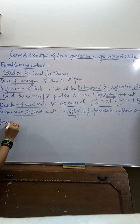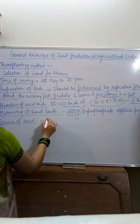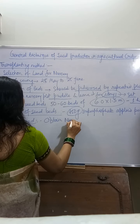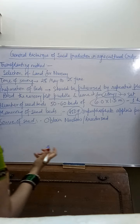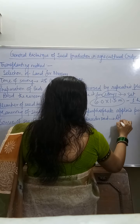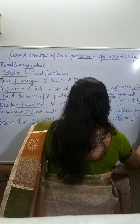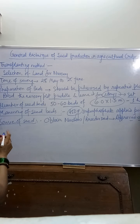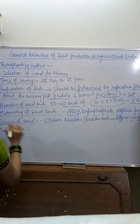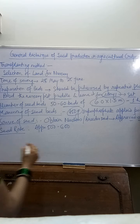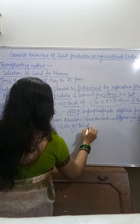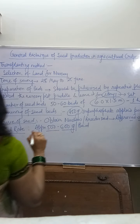Point six: source of seed. जो भी nucleus seed या breeder seed चाहिए होता है वो किसी भी approved agency से ही लेना चाहिए। Point seven: seed rate is approximately 500 to 600 gram per bed — एक bed में 500 से 600 gram seed होने चाहिए।